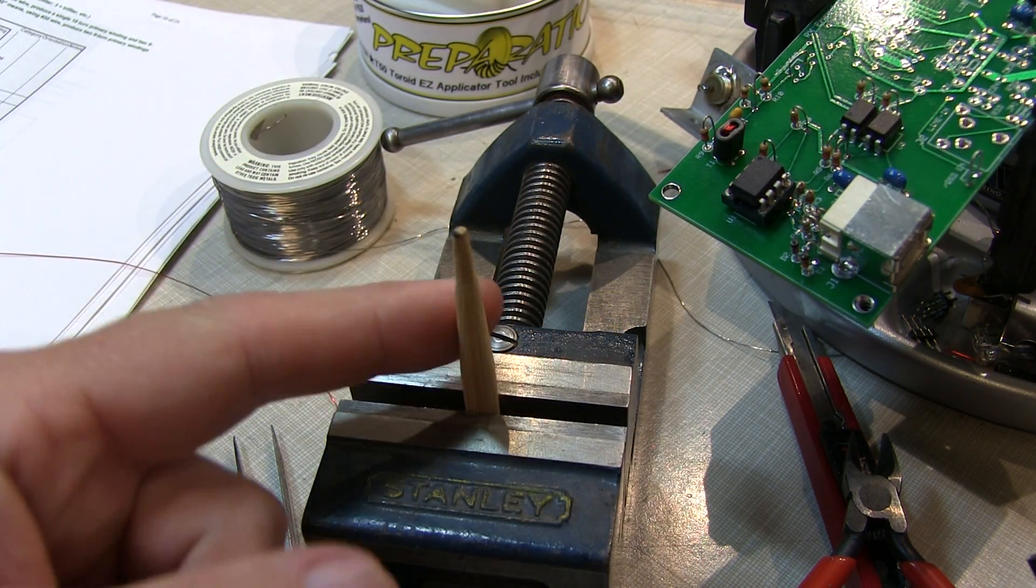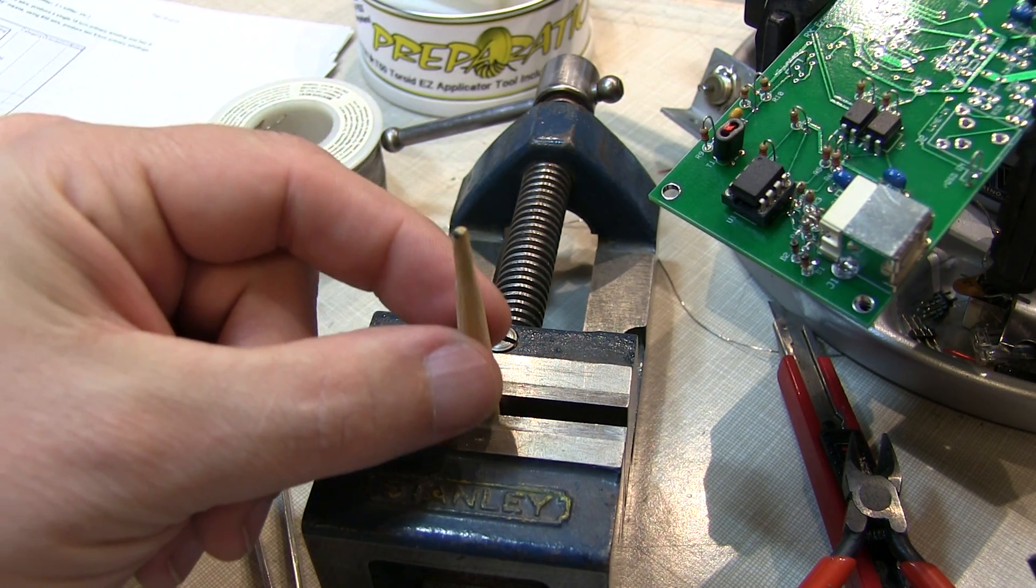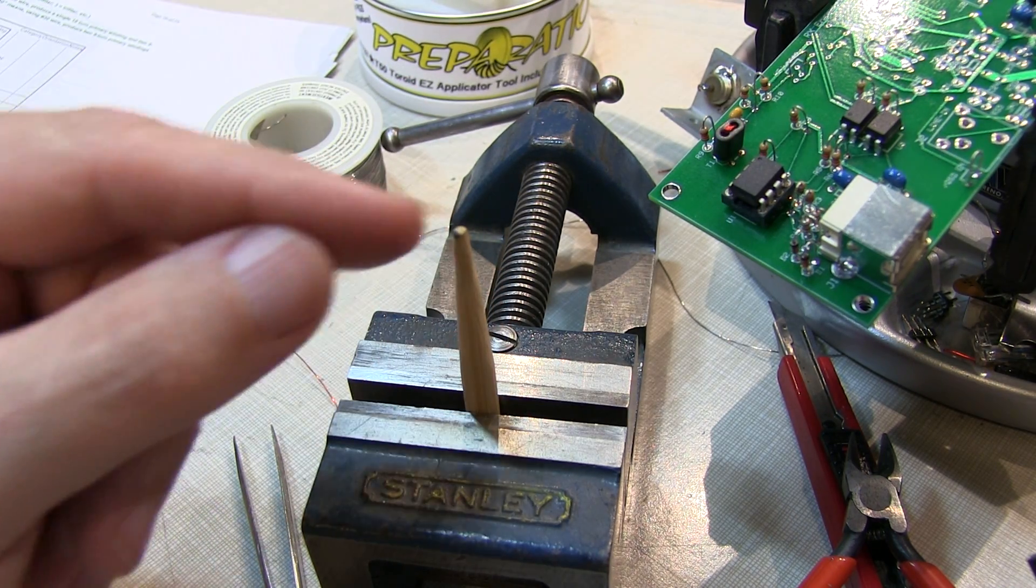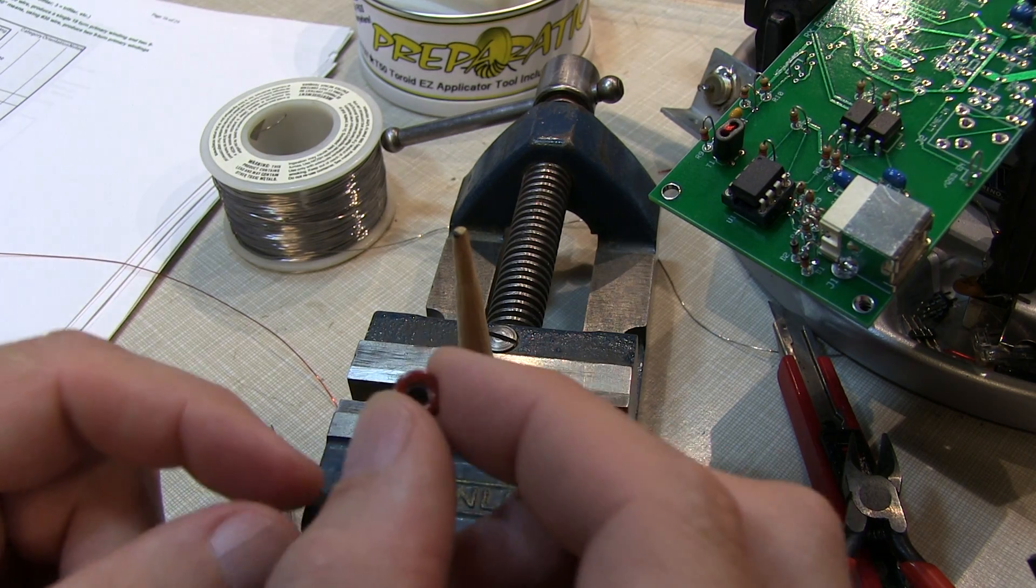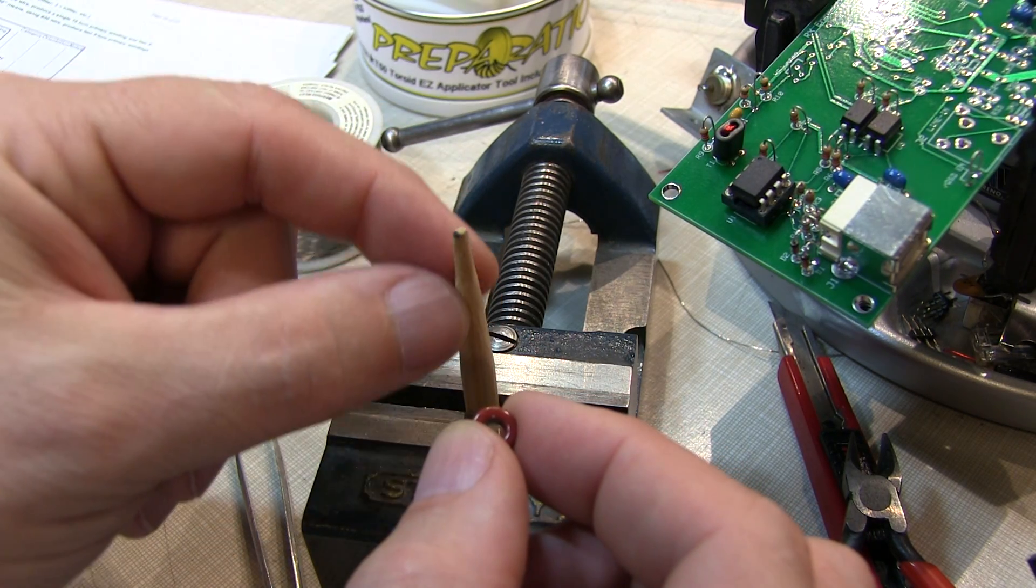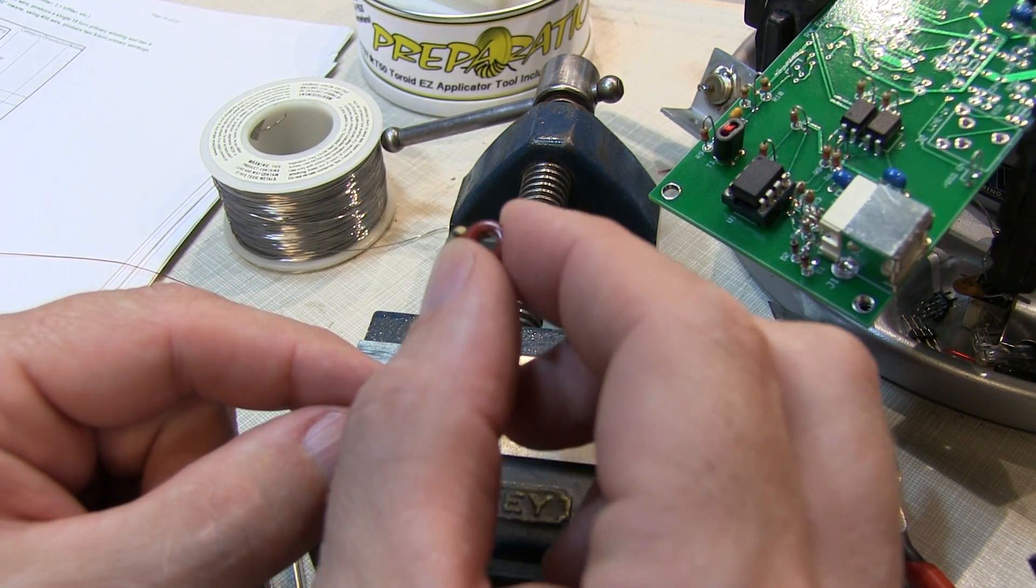I've been using a tapered wooden dowel, this is actually the end of an old chopstick. And you may have to taper this or shave it down depending on the size of the toroid you're using.